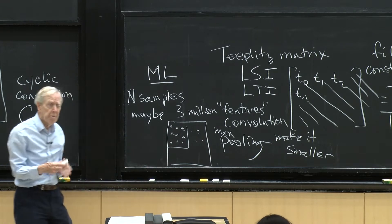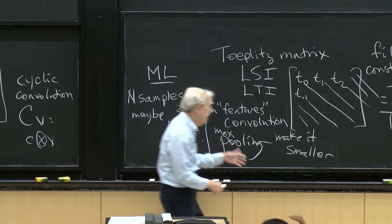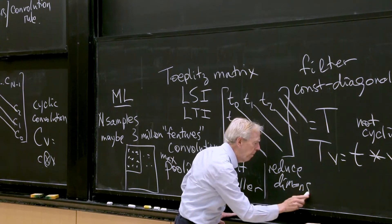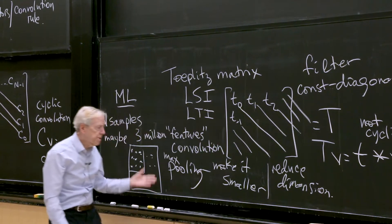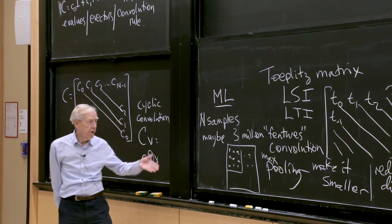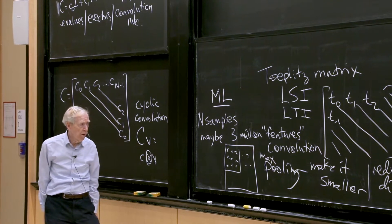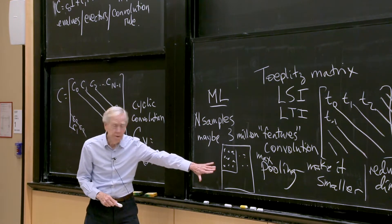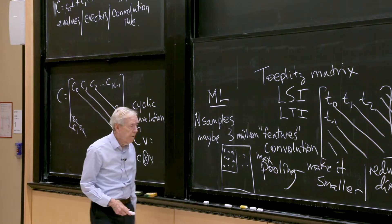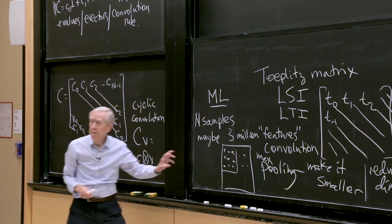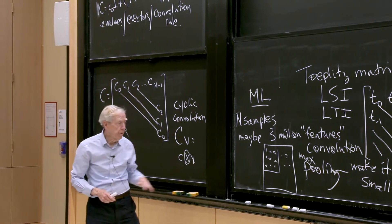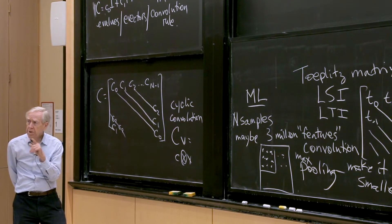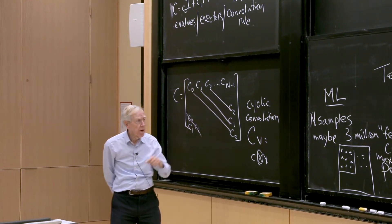Max pooling would be, say, take them three at a time — nine pixels — and replace those nine pixels by one pixel, the max of those nine numbers. That's a very simple operation that just reduces the dimension — making it smaller, reducing the dimension. That's a cheap way to make an image four, nine, or sixty-four times smaller. Max pooling is not even linear, but it's fast.